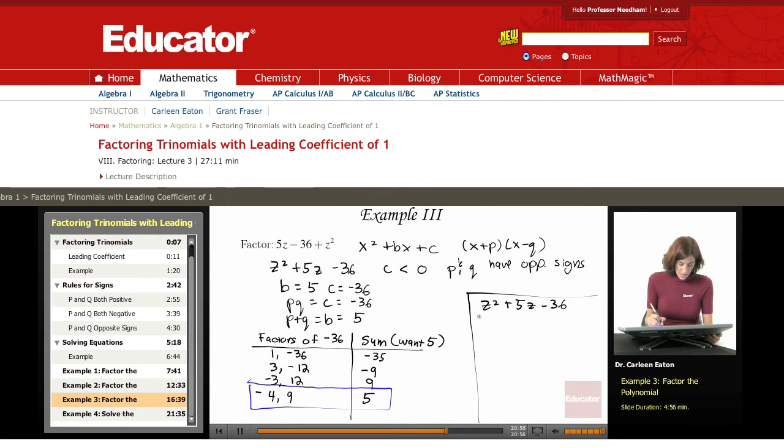And I know that my p could be negative 4 and q equals 9. Or I could certainly do it the other way. And that will give me x minus 4 times x plus 9. As always, you can check this by multiplying it out or using the FOIL method.